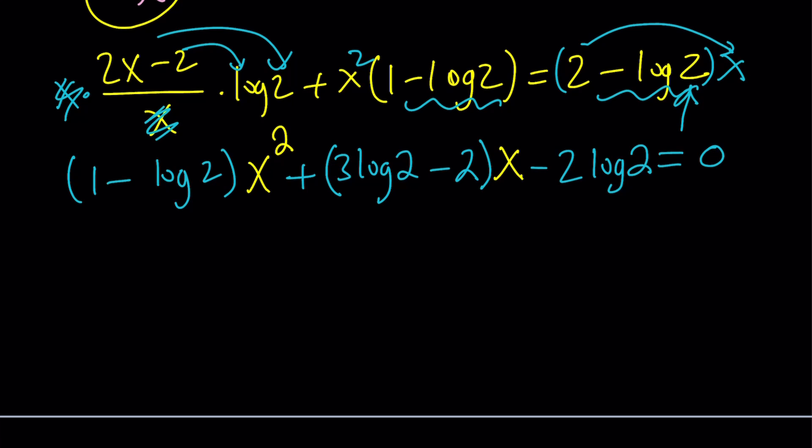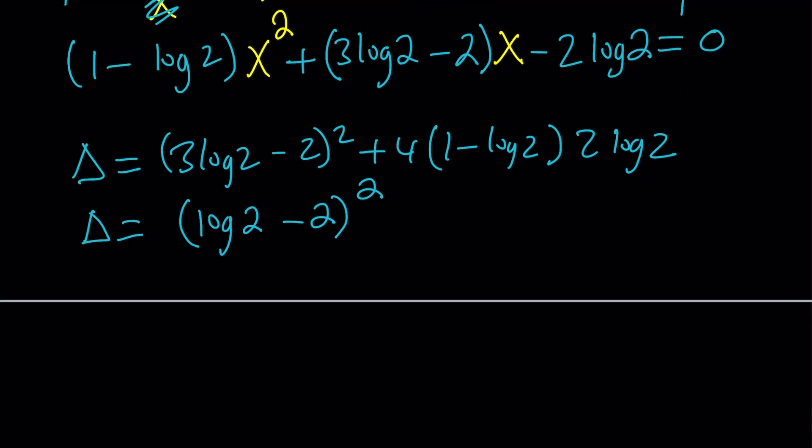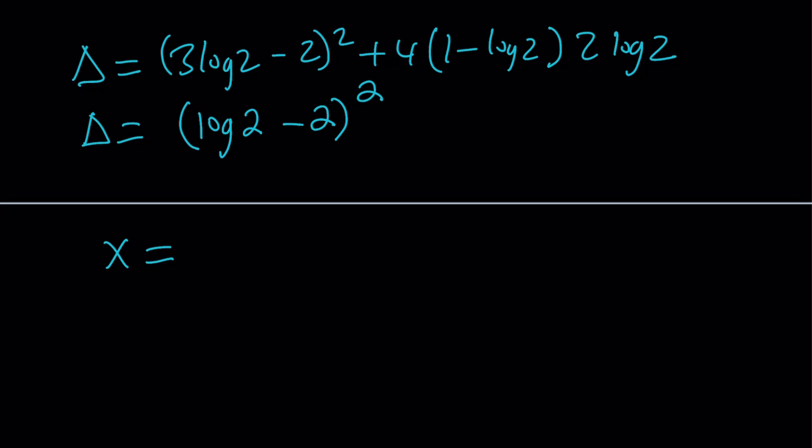Let's solve it using the quadratic formula. I want to find the discriminant first so I can directly plug it in. The discriminant is 3 log 2 minus 2 squared plus 4 times 1 minus log 2, which is b squared minus 4ac. If you simplify this, to keep a long story short, this is going to become log 2 minus 2 quantity squared. This is nice because you can expand and do it, that's an exercise for the reader.